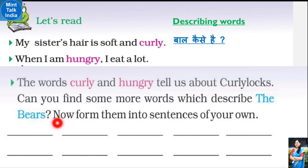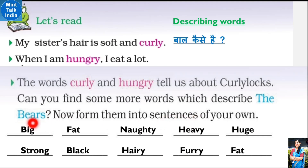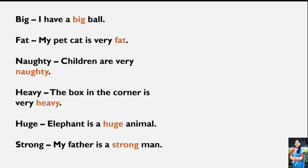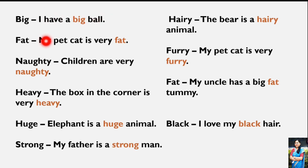Toh bhaalu kaisa hota hai? Bhaalu big - bade hote hain, fat - mote hote hain, naughty bhi hote hain, heavy hote hain, huge - bahut bade hote hain, strong - bahut taaqatwar hote hain, black color ke hote hain, hairy hote hain - matlab unke shareer mein bahut zyada baal hote hain, furry bhi bolte hain - unke body mein bahut fur hota hai. Sentences: I have a big ball. My pet cat is very fat. Children are very naughty. The box in the corner is very heavy. Elephant is a huge animal. My father is a strong man. The bear is a hairy animal. My pet cat is very furry. My uncle has a big fat tummy. I love my black hair.